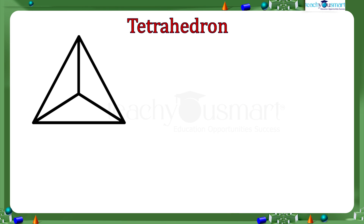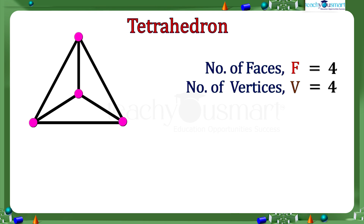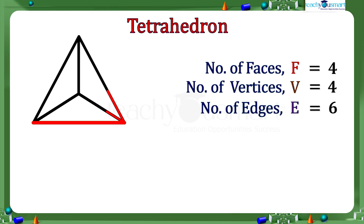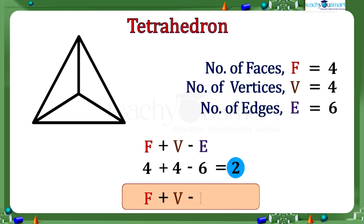Let's try to verify this relation for a tetrahedron. A tetrahedron is a polyhedron composed of four triangular faces, four vertices or corners, and six straight edges. Now we can add the number of faces and the number of vertices and subtract the number of edges. We get 4 plus 4 minus 6, which equals 2. Once again we get F plus V minus E equals 2.